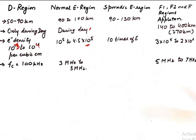I have made a separate table for all the layers with the key points you must know. The D region extends from 50 to 90 kilometers and is present only during the day. Its electron density is relatively low — 10³ to 10⁴ electrons per cubic meter — and the cutoff frequency is 100 kilohertz.